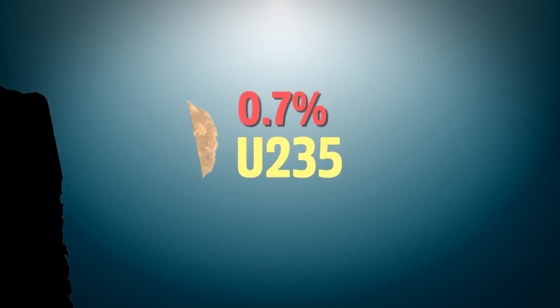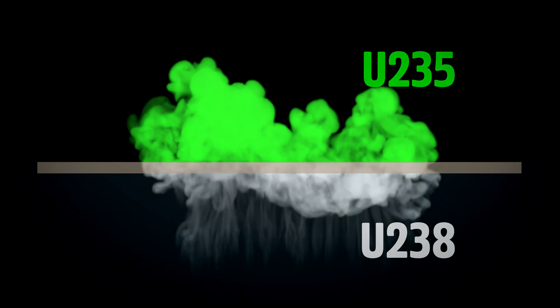Sometimes this enrichment is done by turning it into a gas and letting the lighter gas flow through a one-way barrier so that it rises to the top, because U-235, as you might guess, is lighter than U-238.